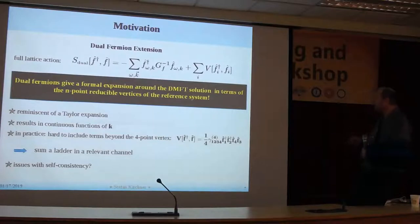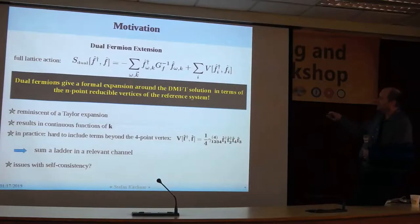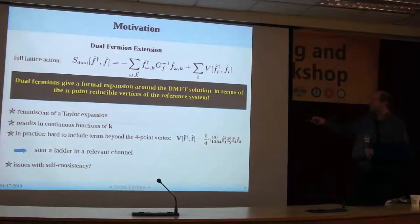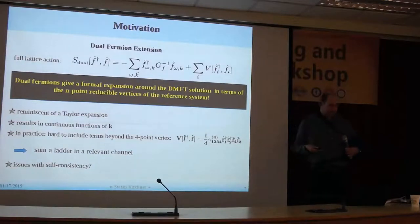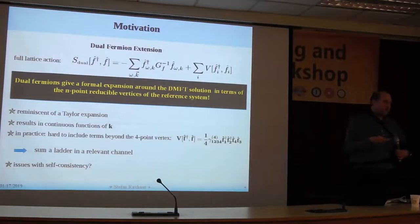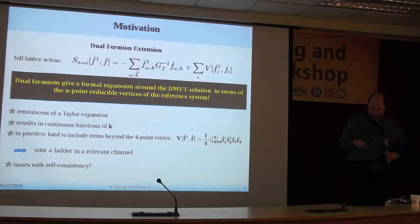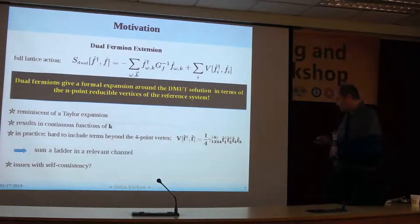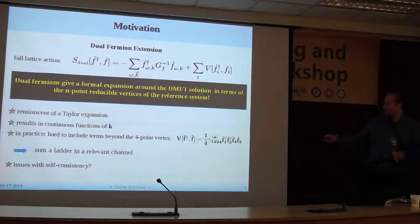The basic idea is that the lattice problem is replaced by an equivalent problem in terms of fermionic degrees of freedom that are somehow dual to the original ones — that's where the name comes from — and that have a k-dependence. This approximation gives you continuous functions in momentum. If you do cluster approximations, then whatever you get has a discrete number of k-points. On the downside, it's perturbative, reminiscent of a Taylor expansion, and therefore you are somehow slaved to analyticity.